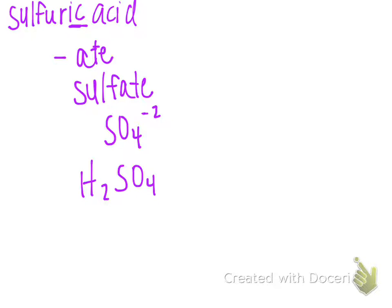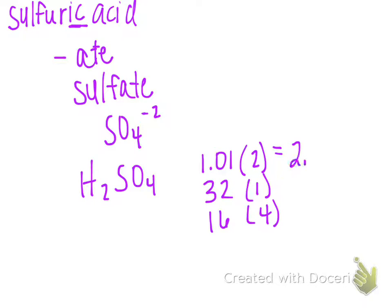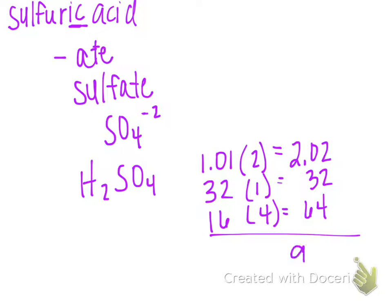Now we go ahead and solve for the molar mass. How many hydrogen atoms do I have? Two. The molar mass of hydrogen is 1.01, or realistically just 1. Sulfur has one sulfur atom, and sulfur's molar mass is about 32. Oxygen's molar mass is 16, and I have four of those. Adding all those up — the 0.02 is not going to throw us off — I get a molar mass of 98 grams per mole. The units for molar mass are grams per mole; for atomic mass they're AMU.